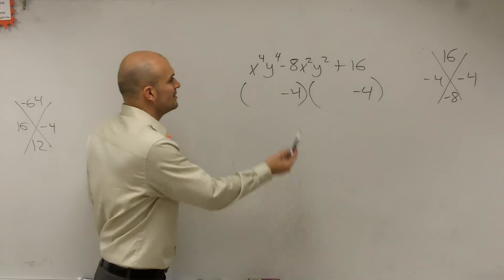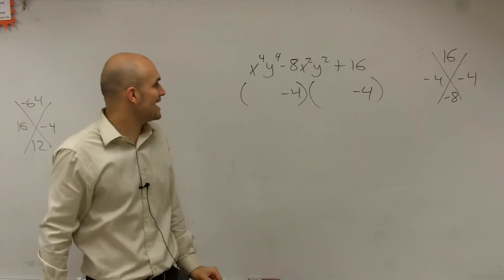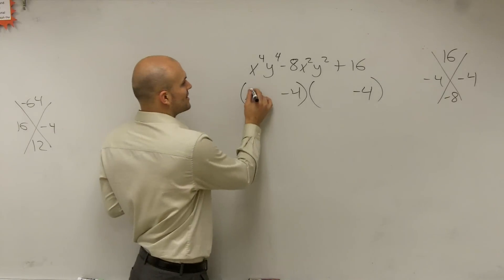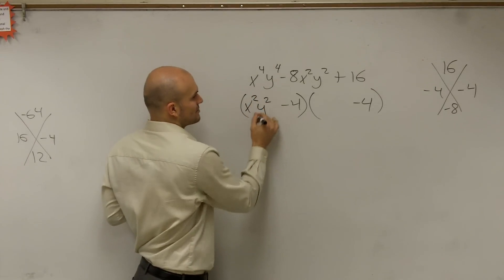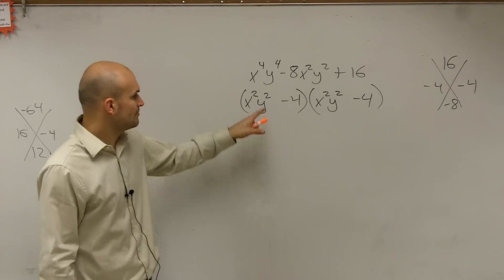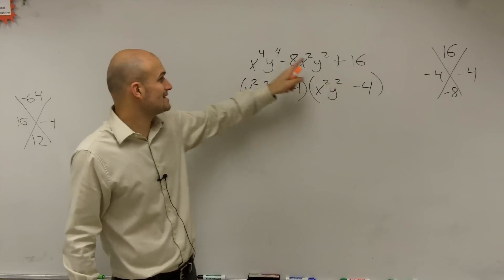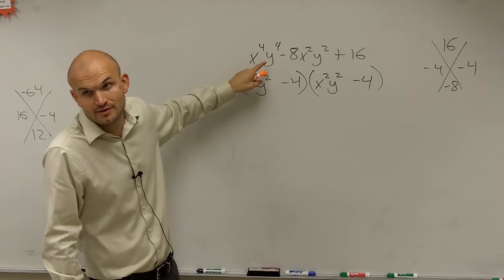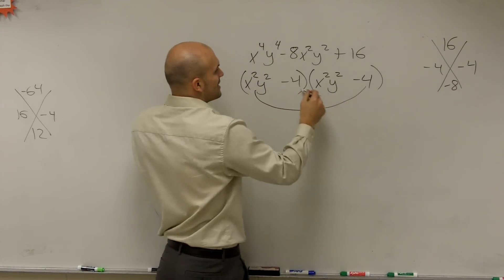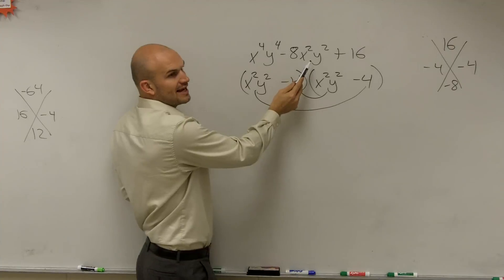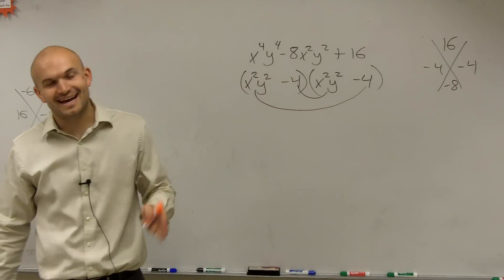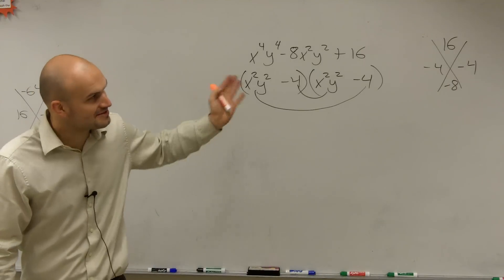Now our problem comes in — what two values are going to multiply to give us x to the fourth, y to the fourth? Well, what we're going to have to write is x squared y squared times x squared y squared. Because does x squared y squared times x squared y squared give us x to the fourth y to the fourth? Yes. And then when you multiply your outer terms and your inner terms, are you going to get negative 8x squared y squared? Yes. So there's your answer.